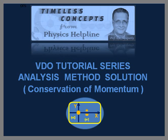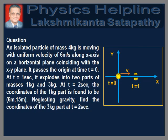In this video tutorial, we will discuss a problem on conservation of linear momentum and center of mass. The question is as follows. An isolated particle of mass 4 kg is moving with uniform velocity of 6 meters per second along the x-axis on a horizontal plane coinciding with the xy plane. It passes the origin at t equal to 0. At t equal to 1 second, it explodes into two parts of masses 1 kg and 3 kg. At t equal to 2 seconds, the coordinates of the 1 kg part are found to be 6 meters and 15 meters. Neglecting gravity, find the coordinates of the 3 kg part at t equal to 2 seconds.